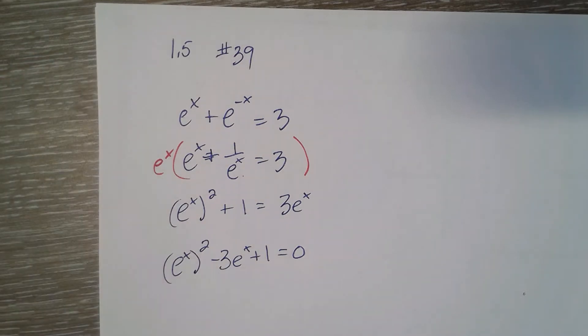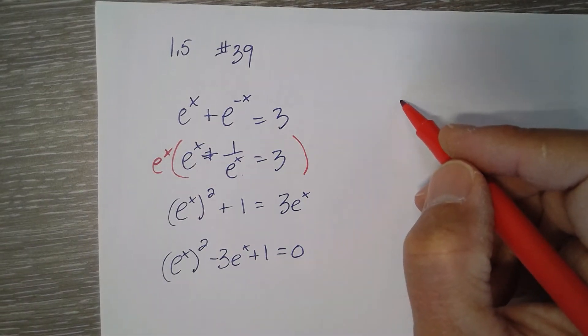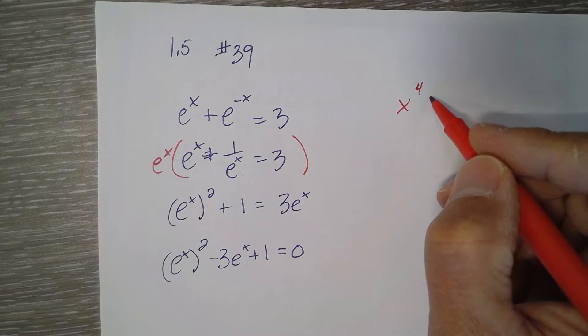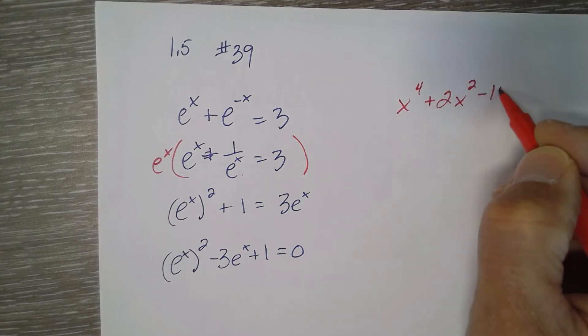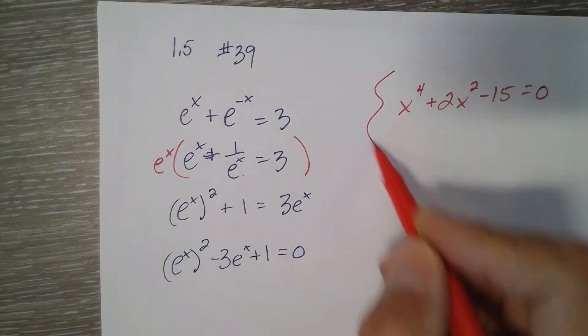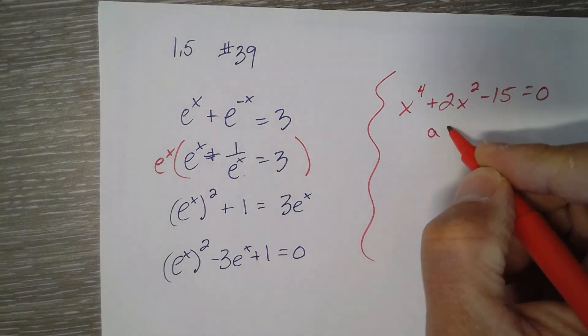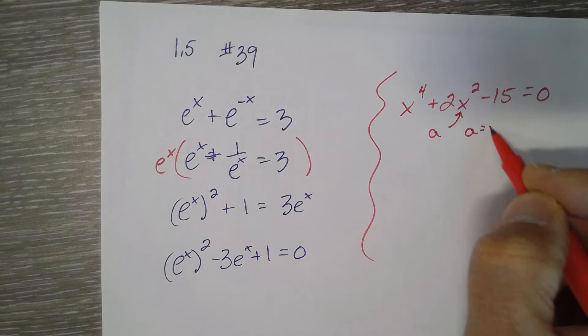Well, this is an example of a quadratic type equation. So we've had a bunch of quadratic types. If you had like x to the 4th plus 2 x squared minus 15 equals 0. So that's a quadratic type where you'd say, well, whatever that is, that's what we're going to call a. So a is equal to x squared.